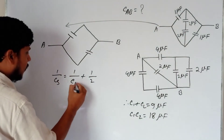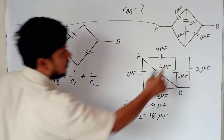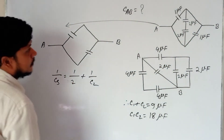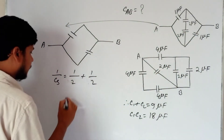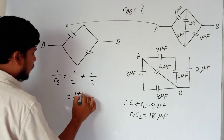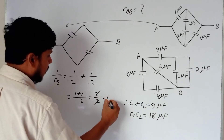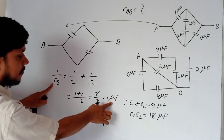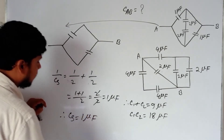We will calculate 1 by C1 and 1 by C2 for the series combination. C1 is 1, so 1 by C1 is 1. And 1 by C2 is also 1 — so that makes 2. Then 1 plus 1 equals 2 by 2. What is that? 1 microfarad. So 1 by Cs equals 1 microfarad, meaning Cs equals 1 microfarad.